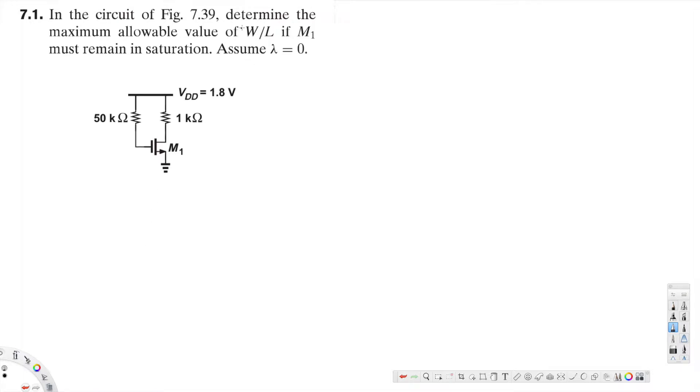This problem is asking to determine the maximum allowable value of W over L if M1 must remain in saturation. Assume lambda is equal to zero. Now in order to be in saturation, we have to have VDS that should be greater than VGS minus V threshold. This is the condition for saturation.